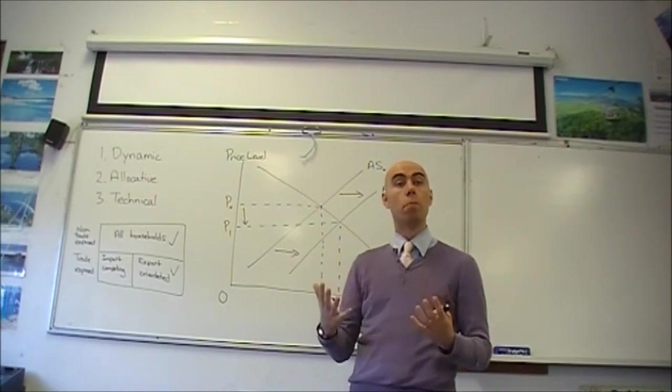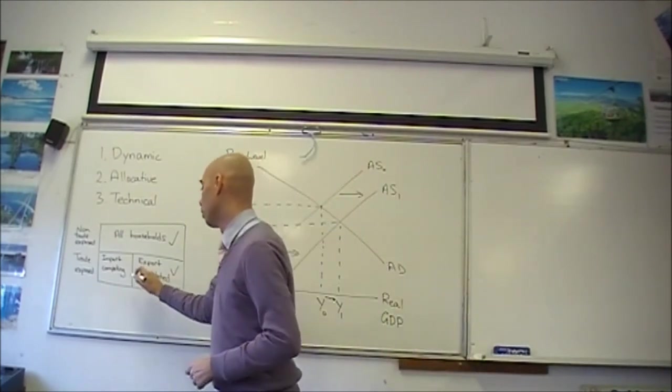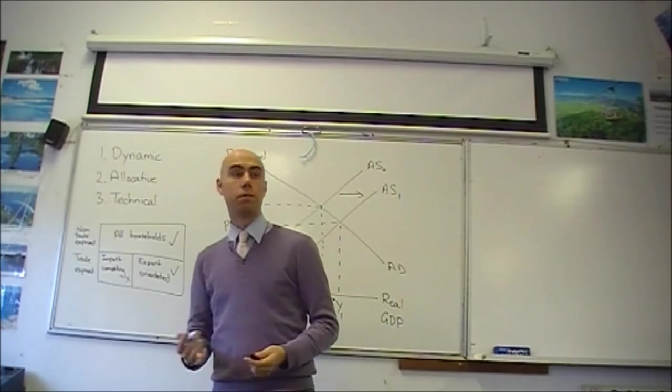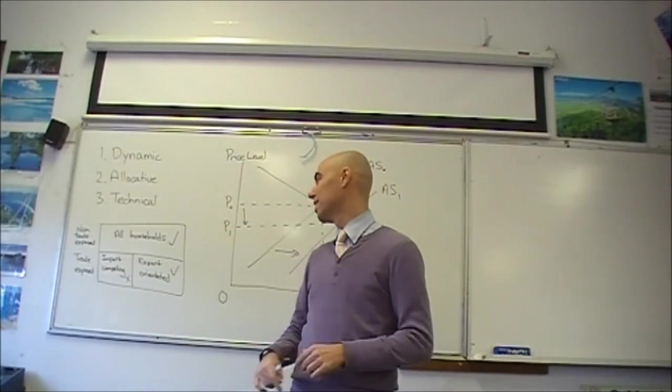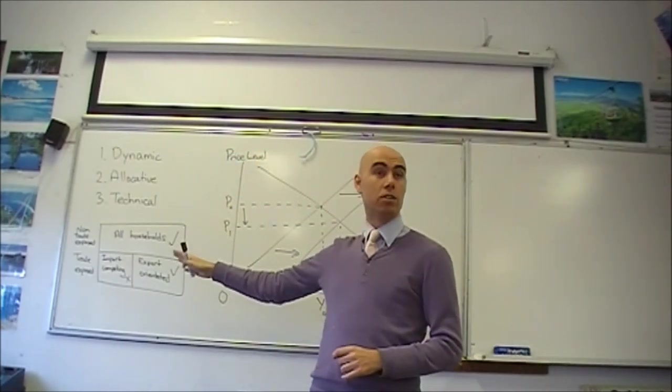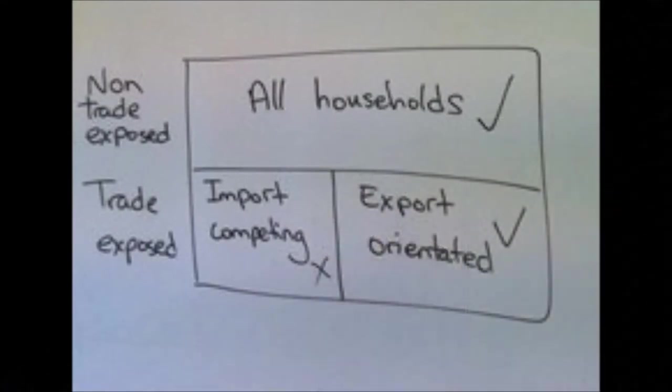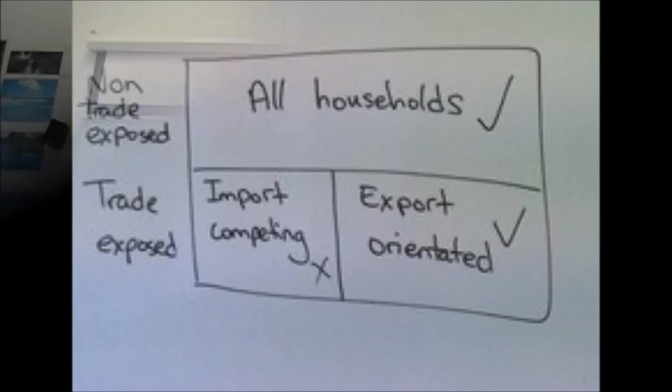That means that the drawbacks, those in the import competing industries, so the car industry, for example, or other manufacturing industries, they not only see the downside of free trade, it is heavily concentrated amongst them. They feel a big impact. They lose their jobs. We get a 5% discount on our cars. They lose their entire income. And for a lot of them, because it's structural unemployment, they're unable to get another job, or they must get another job that's fewer hours or lower pay. So it really does affect them quite heavily.